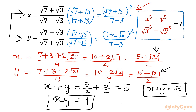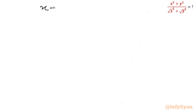Let us target the numerator first: x⁵ + y⁵. I will begin with x + y = 5 and xy = 1, and calculate x⁵ + y⁵ step by step. Let us start by squaring the equation x + y = 5.